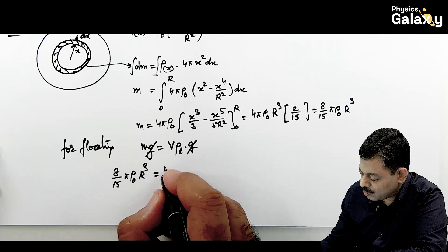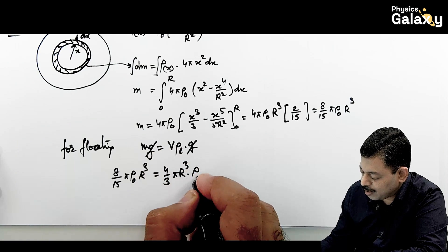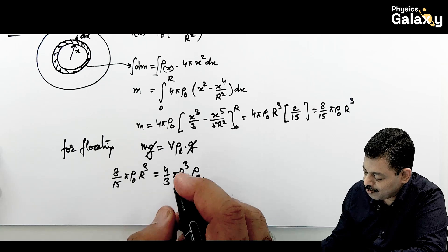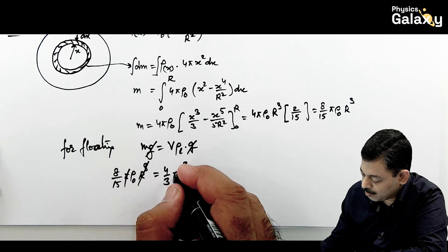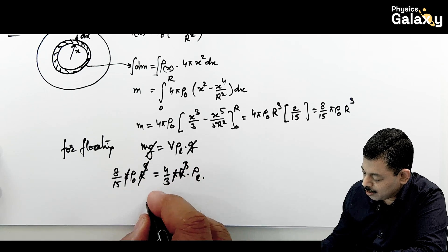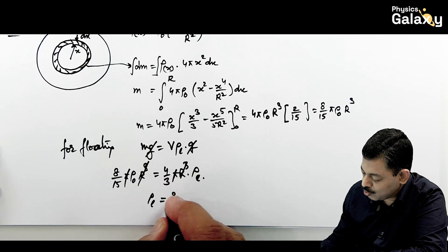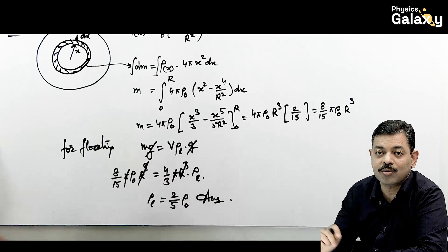After cancelling g, 4/3·π, and R³ from both sides, we get ρ_liquid = (2/5)·ρ₀. That is the answer for this question.